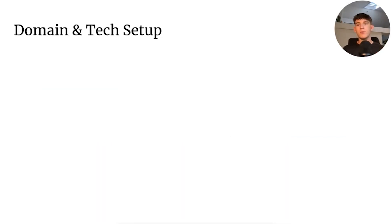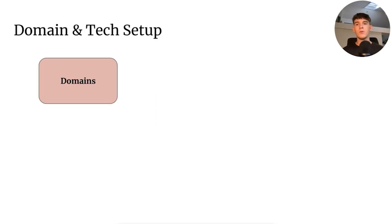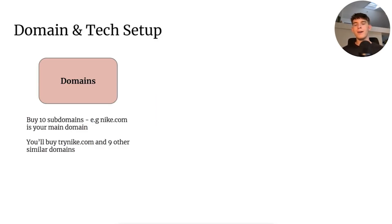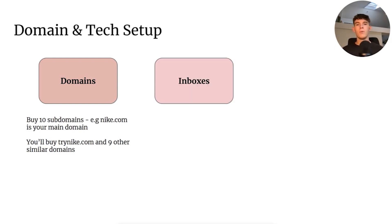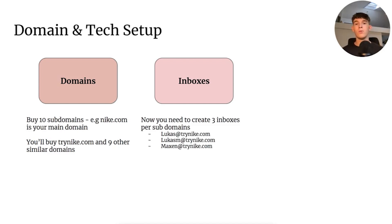When we start sending our emails, we need to first set up a whole domain and tech setup. You start with the domain — you will buy 10 subdomains. For example, if your main domain is nike.com, then you'll buy 10 subdomains that sound something like trinike.com and nine other ones similar to that domain. With these, you'll create separate inboxes per domain.